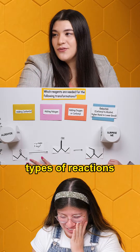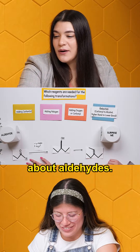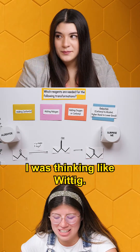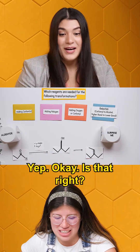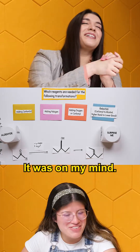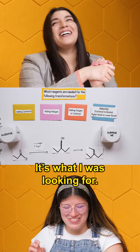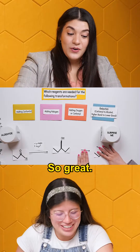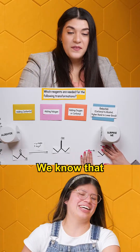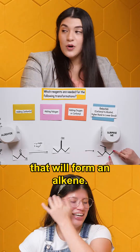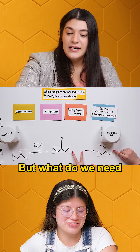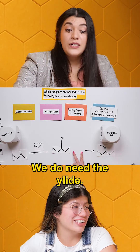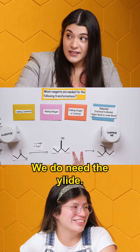We can look at different types of reactions we've learned about aldehydes and ketones. I was thinking Wittig. Yes — beautiful, that's what I was looking for. We know that the Wittig reaction will form an alkene. But what do we need before then? We need the ylide.